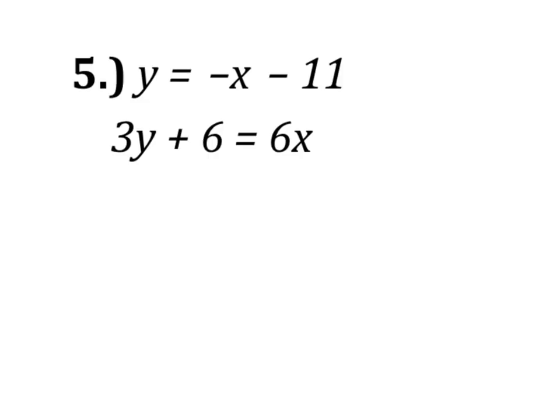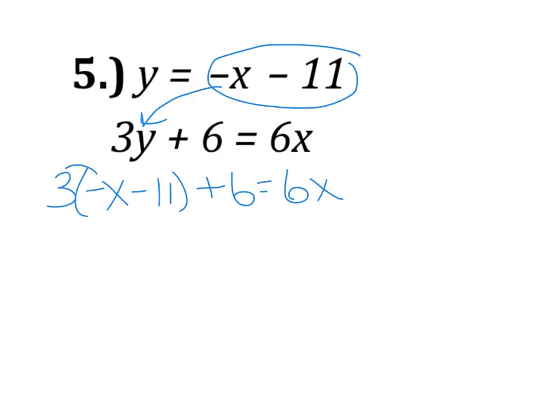For the last example, we are again doing substitution. We're told Y equals negative X minus 11. So we are going to substitute that in for the Y value in the second equation. So instead of 3Y, we'll have 3, and then in parentheses negative X minus 11, plus 6 equals 6X. We're going to distribute, so negative 3X minus 33 plus 6 equals 6X.